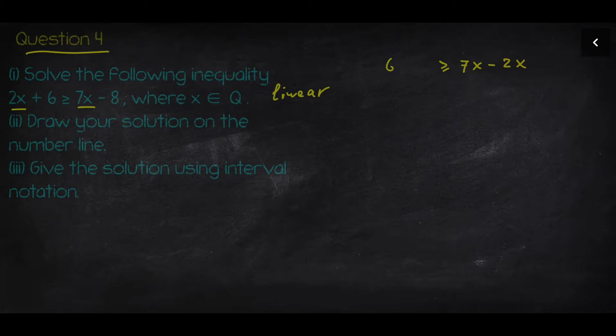After simplifying, I'll get 5x on the right side and 14 on the left side. Then I divide it by 5 and I'll get 14 over 5 more or equal than x.